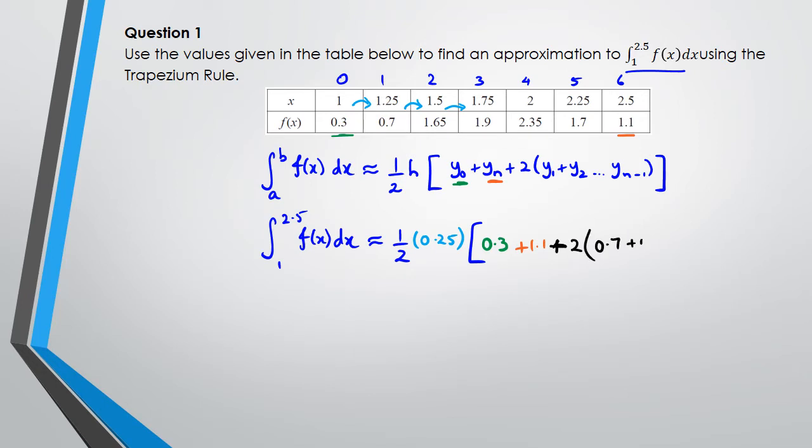And then plus 2 times all the other terms in the middle, so we've got 0.7 plus 1.65 plus 1.9 plus 2.35 plus 1.7. So what we end up actually getting is, when you put this in the calculator and work it out, you actually get 2.25.